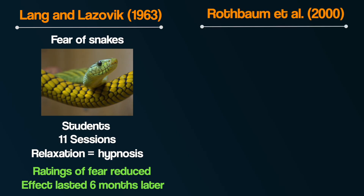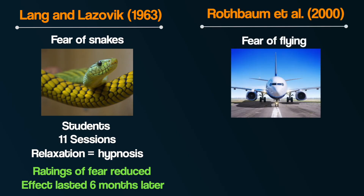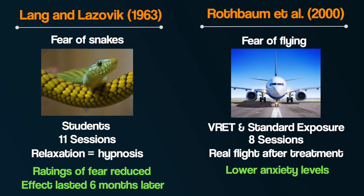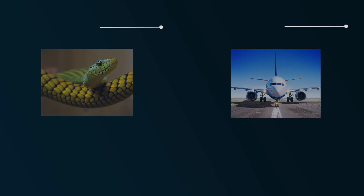Secondly, research by Rothbaum et al. in 2000 used virtual reality exposure therapy as well as standard exposure with people who had a fear of flying. Participants were given eight sessions over six weeks, and following treatment, participants agreed to take a real flight, where researchers measured their willingness to fly and their anxiety levels. They found that anxiety levels were lower than a control group who had not received systematic desensitization, and this improvement was maintained at six-month follow-up.